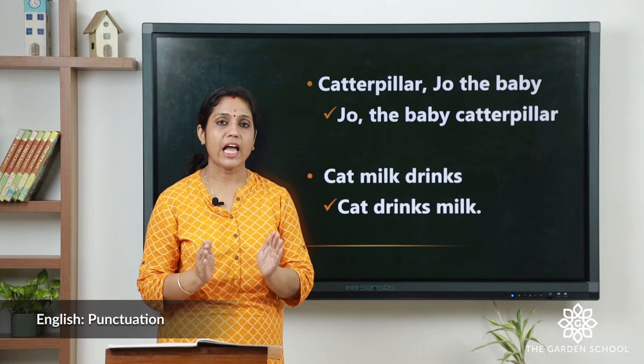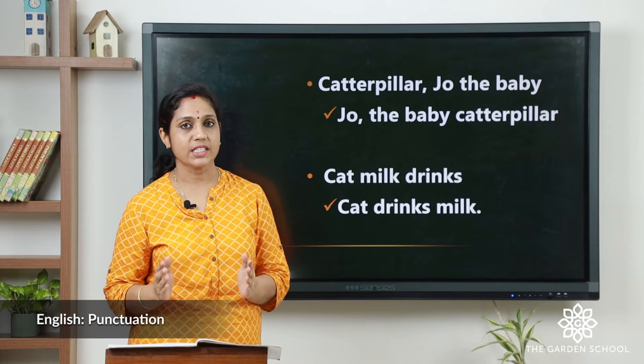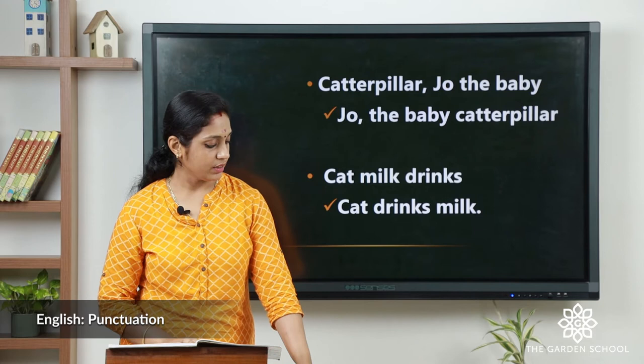A group of words should have a meaning; only then it becomes a sentence. Now here we have: 'cat milk drinks.' Is that a sentence? No, it doesn't have any meaning. Let's rearrange the words: 'cat drinks milk.' Now there is a meaning, and now we can say that it's a sentence.